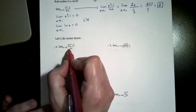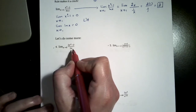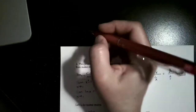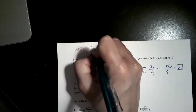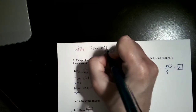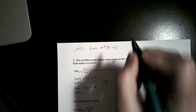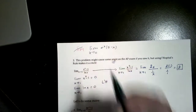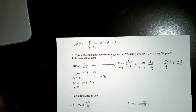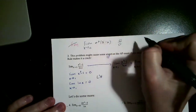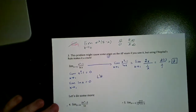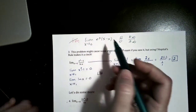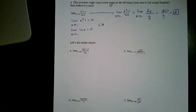This is really only going to happen when we have rational functions. If you just had something like the limit of e to the x times (5 minus x) as x approaches 0, you're not going to use L'Hôpital, because L'Hôpital's rule only deals with 0 over 0, or infinity over infinity. So if there's no denominator, you don't have to worry about doing L'Hôpital's rule.